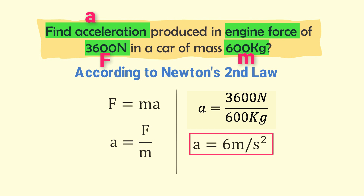Hence, 3600 newtons will produce an acceleration of 6 meters per second squared in a car of mass 600 kg.